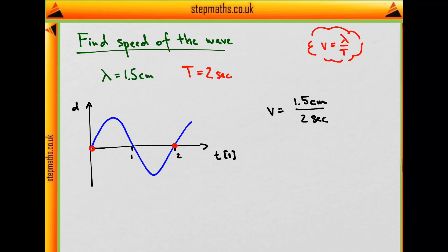This allows us to plug into our formula 1.5cm and 2 seconds. That equals 0.75cm per second, which is the final answer and option C.